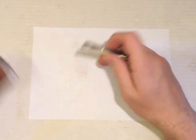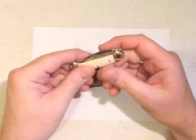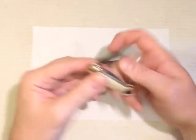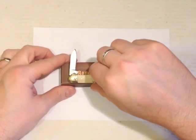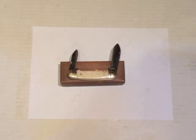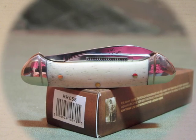So there we have the Rough Rider Mini Canoe RR055. A lovely little knife I think, and well worth eight quid. Thanks for watching.